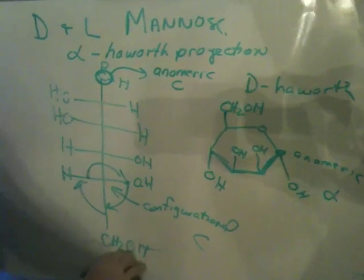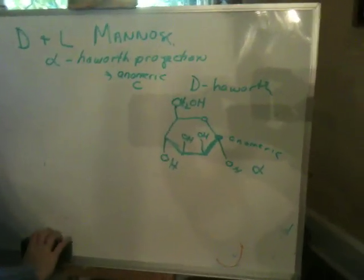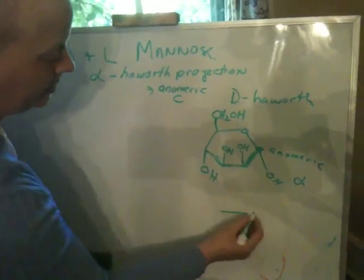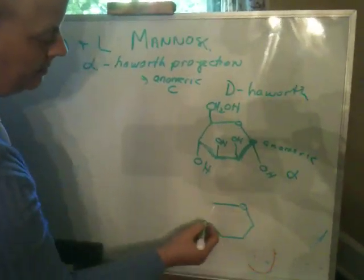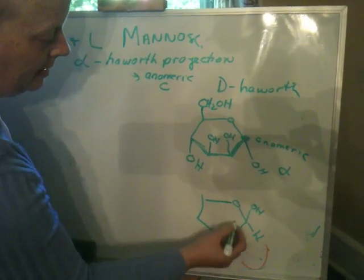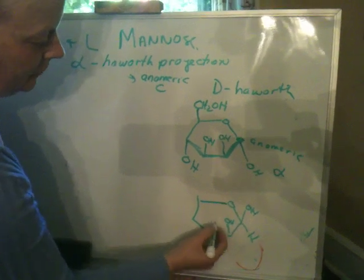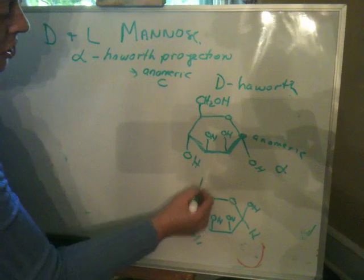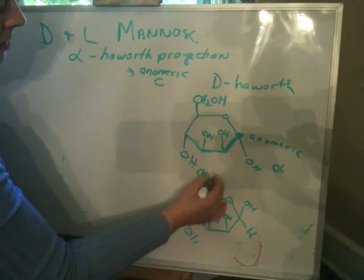Now supposing I want to draw the beta anomer. If I wanted to draw the beta anomer I would go like this. I would just put the OH up like that, and then it would be up. These all stay the same because these are fixed, I was explaining that to you in class. Is this going to be any different? No, same deal.